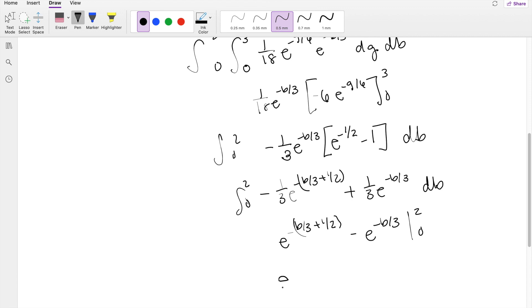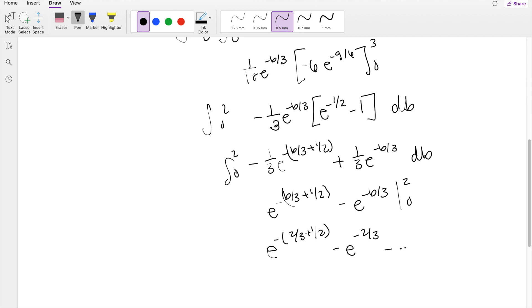Plugging in the upper limit, you get negative e to the negative 2 thirds, plus 1 half, minus e to the negative 2 thirds. Plugging in 0 here, you get minus e to the negative 1 half, plus e to the 0, which is just 1.